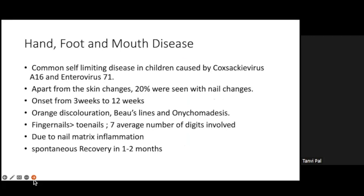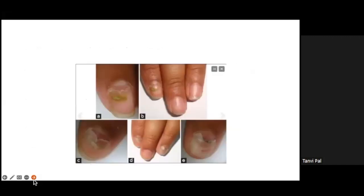Hand, foot and mouth disease is a common self-limiting disease in children caused by Coxsackievirus A16 and Enterovirus 71. Apart from skin changes, around 20 percent of children show nail changes occurring from three to twelve weeks after infection — discoloration, Beau's lines, and onychomadesis. Fingernails are involved more than toenails, and seven is the average number of digits involved, due to nail matrix inflammation. There is spontaneous recovery. In recent years, parents have been coming in three to four months after hand, foot and mouth disease with nails being shed, and we just reassure them that it will get better.